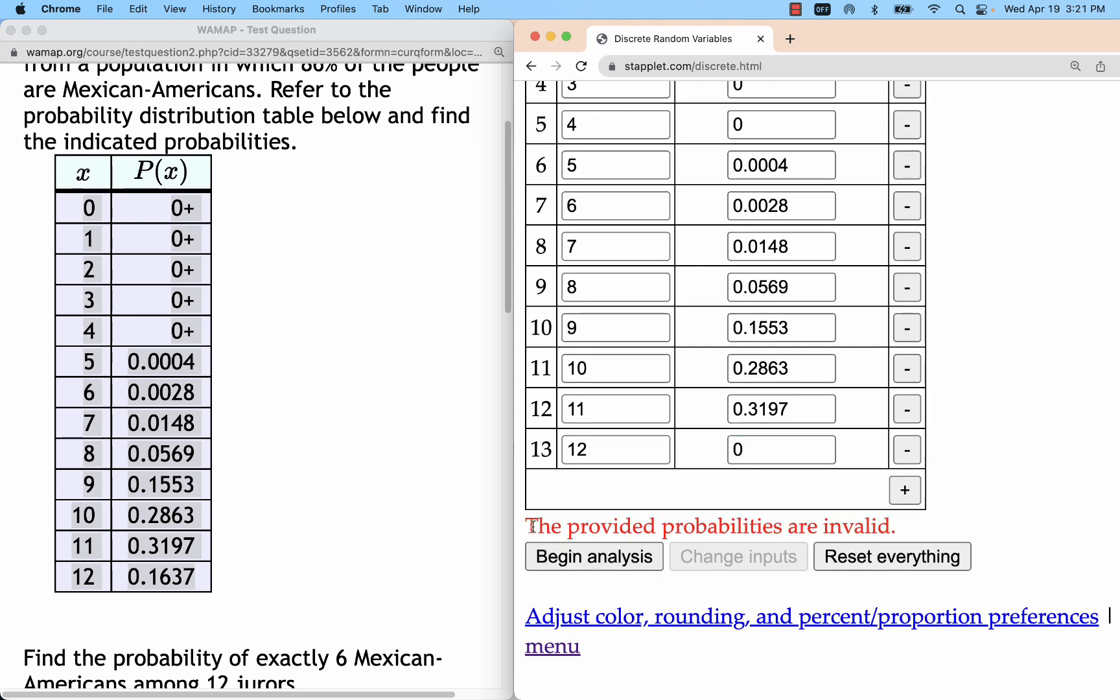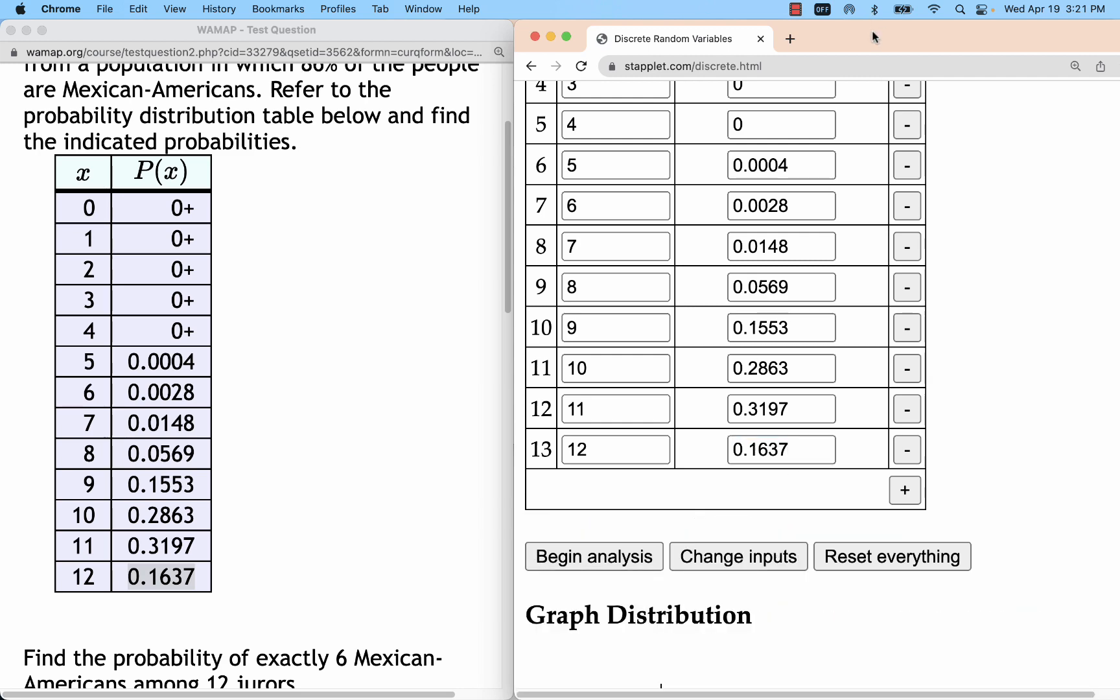In staplet, you get an error. And it won't give you the error if you're pretty close to one. But I'm far enough away, 16% away, that it's not going to allow that. So now I'm going to actually put in the value, begin analysis, and show you what we get.